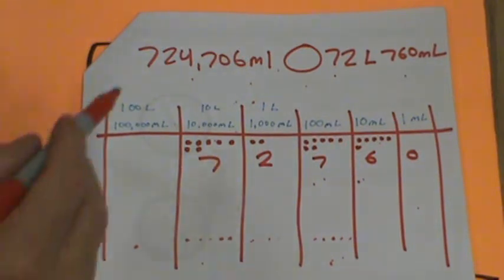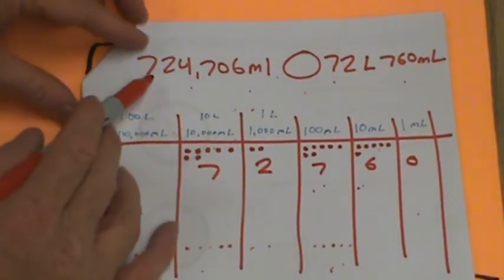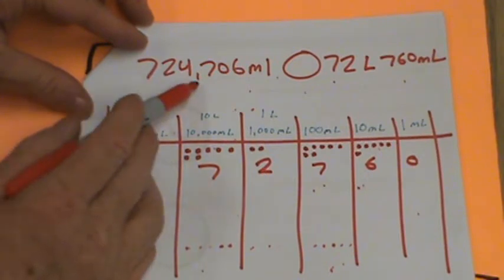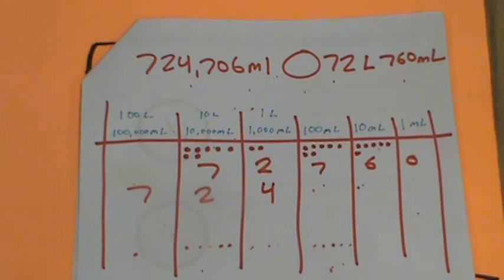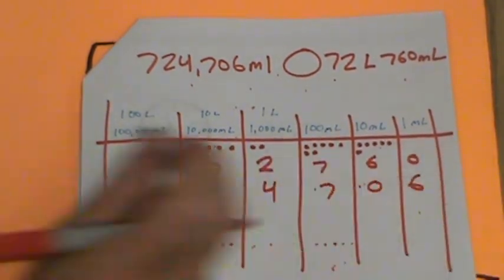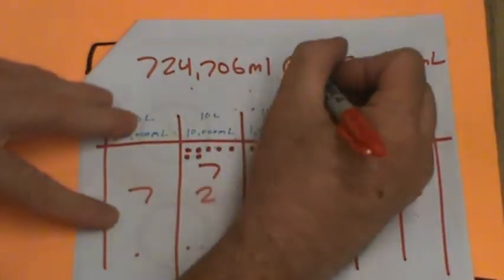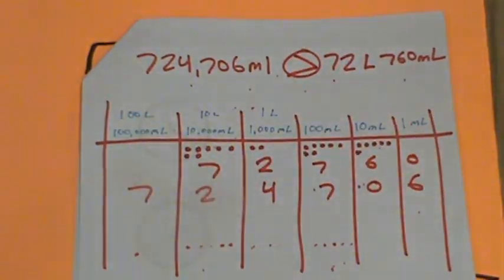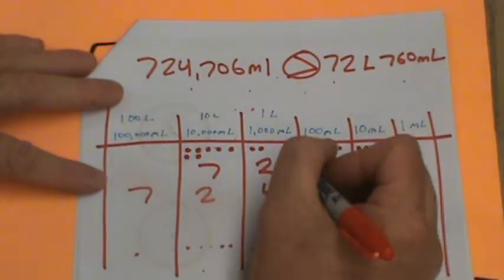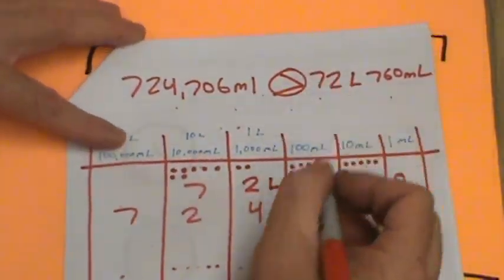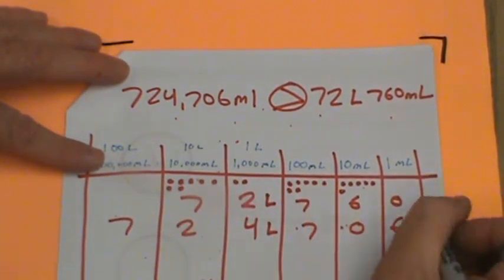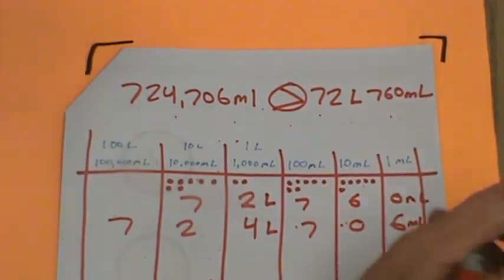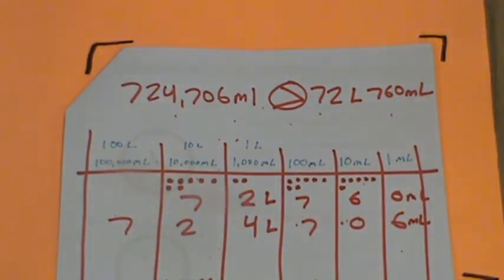But what about the next one? We don't even need to do the dots. Okay, let's just take a look. 724,000. So that would be 724,706. So we can see that this number is definitely greater. And we can break this up into liters and milliliters, can't we? 72 liters, just like it said up there. 724 liters, 706 milliliters, and 760 milliliters. So we can totally see that that is greater. 724 liters, definitely bigger than 72.